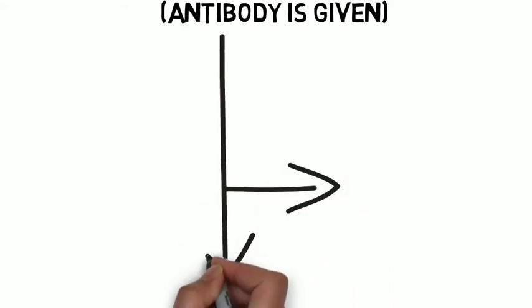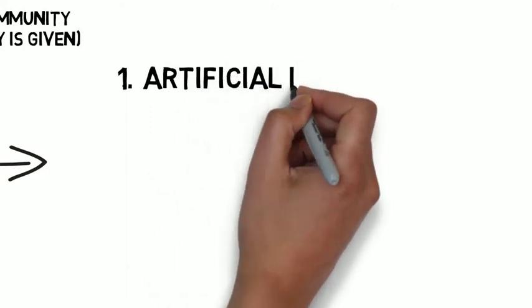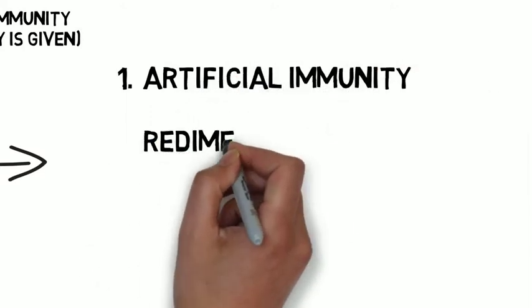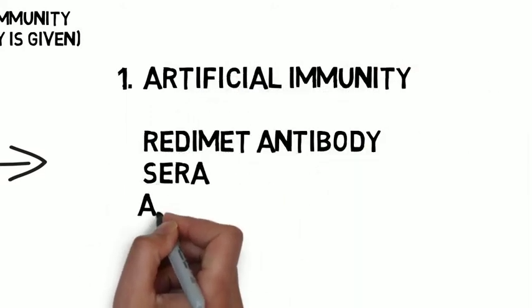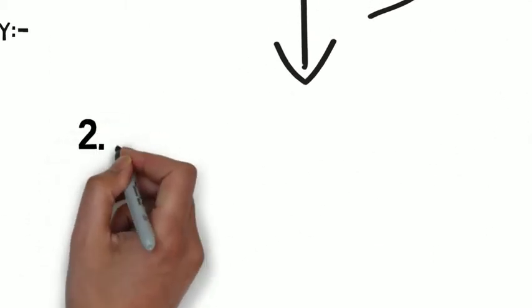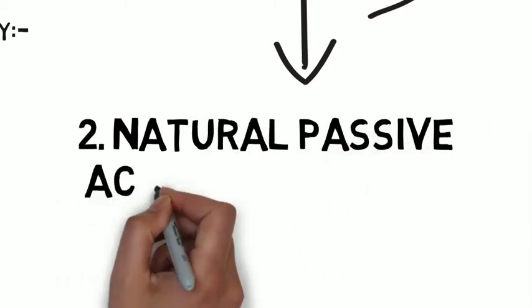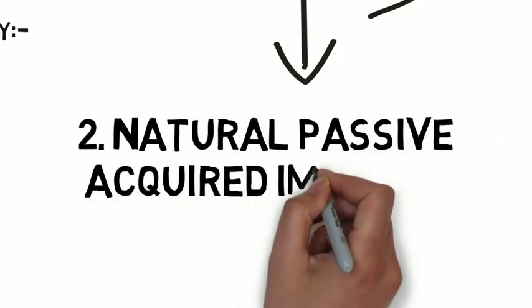This also has two categories: first is natural, second is artificial. In artificial, ready-made antibodies are given, sera is also given, antivenom and antibodies are also given. In natural, there is vertical transmission.